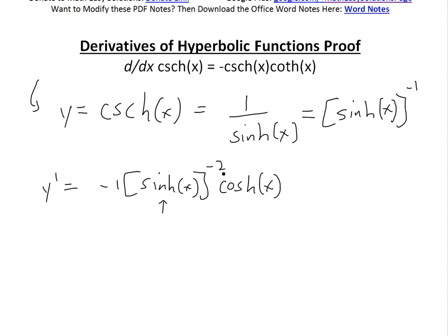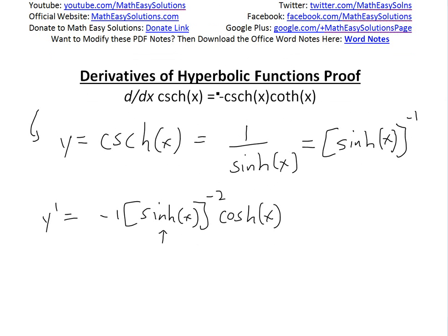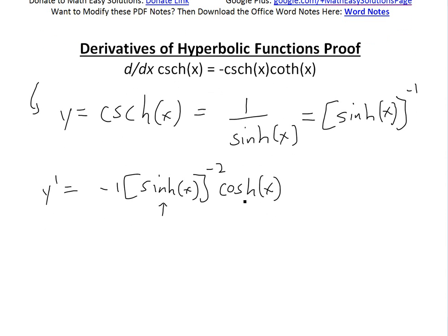You can see the proof for that in my earlier hyperbolic function videos, along with this power rule and derivative of sinh of x. So this equals that, and then we could simplify. This will be negative cosh of x divided by sinh of x squared.